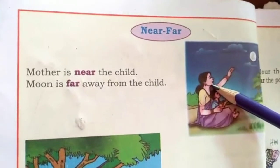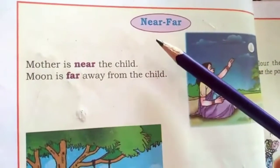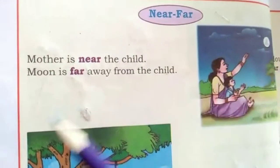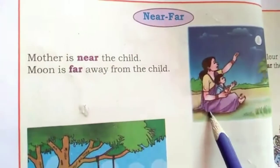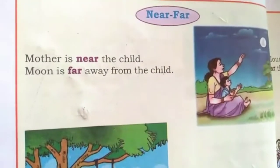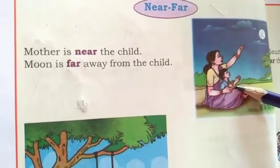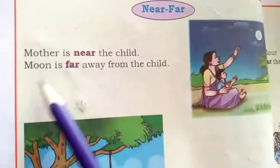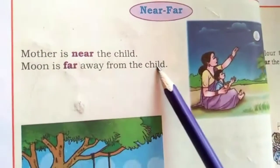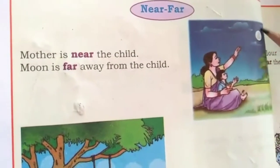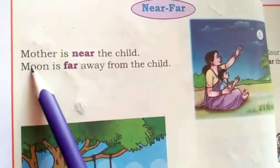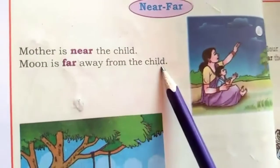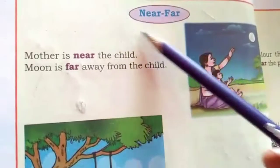Now let's continue with Max class, same chapter — Spatial Understanding, page number 12. Near, far. See the picture here: mother is near the child — the child is sitting near the mother on her lap. Moon is far away from the child — it is very far. So mother is near the child, and moon is far from the child. We are learning near and far.